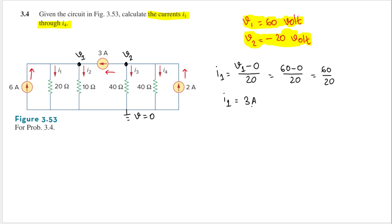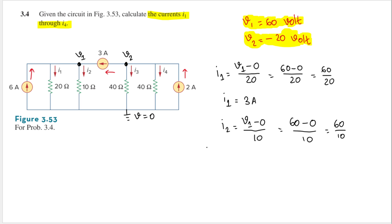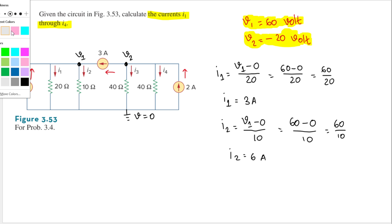Now for i2: using the same logic, i2 equals (V1 minus 0) divided by 10 ohms, so i2 equals 60 divided by 10, which gives i2 equals 6 amperes. Let's highlight that — i1 is 3 amperes and i2 is 6 amperes.